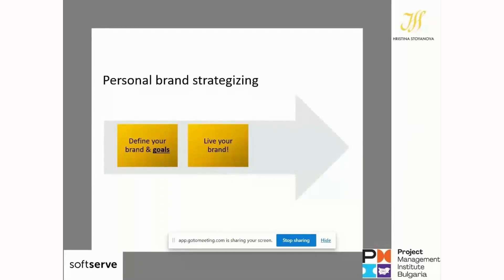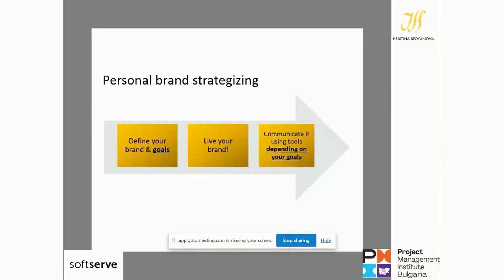So we have defined our brand, defined the goals where we want to go, and are living our brand on a daily basis — fully, consistently, in everything we think, do, and say. The next step is to define our communication strategy: how we are going to communicate our brand in a way to achieve our goals, depending on our goals.